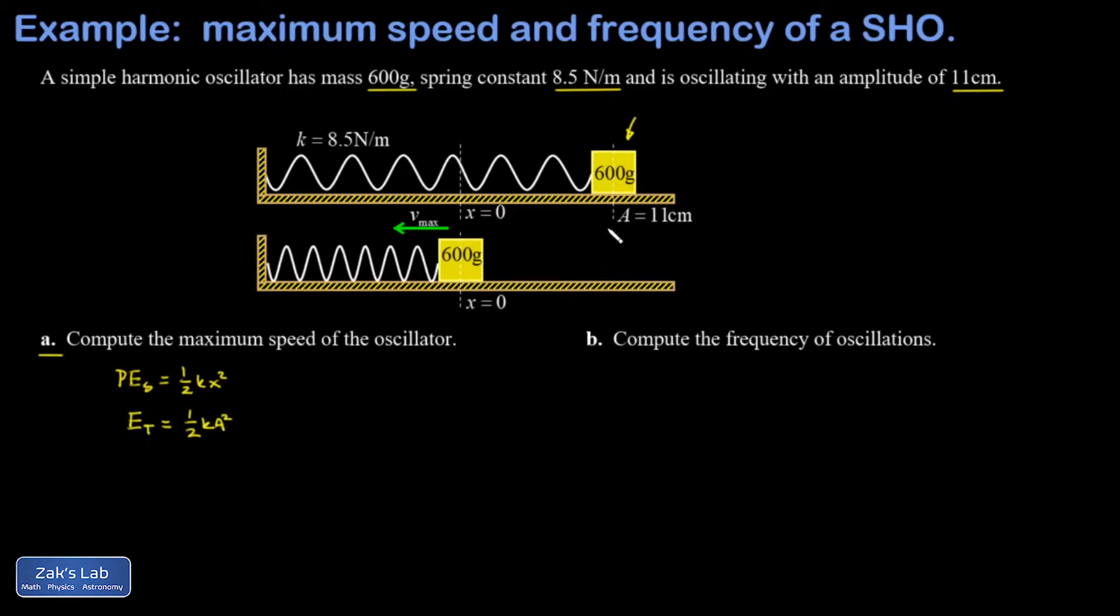By the time the mass is passing through equilibrium all the spring potential energy is gone because the spring is at its equilibrium length. So all the energy must be kinetic at this point. That total energy is kinetic when I pass through the equilibrium position and that corresponds to v max.